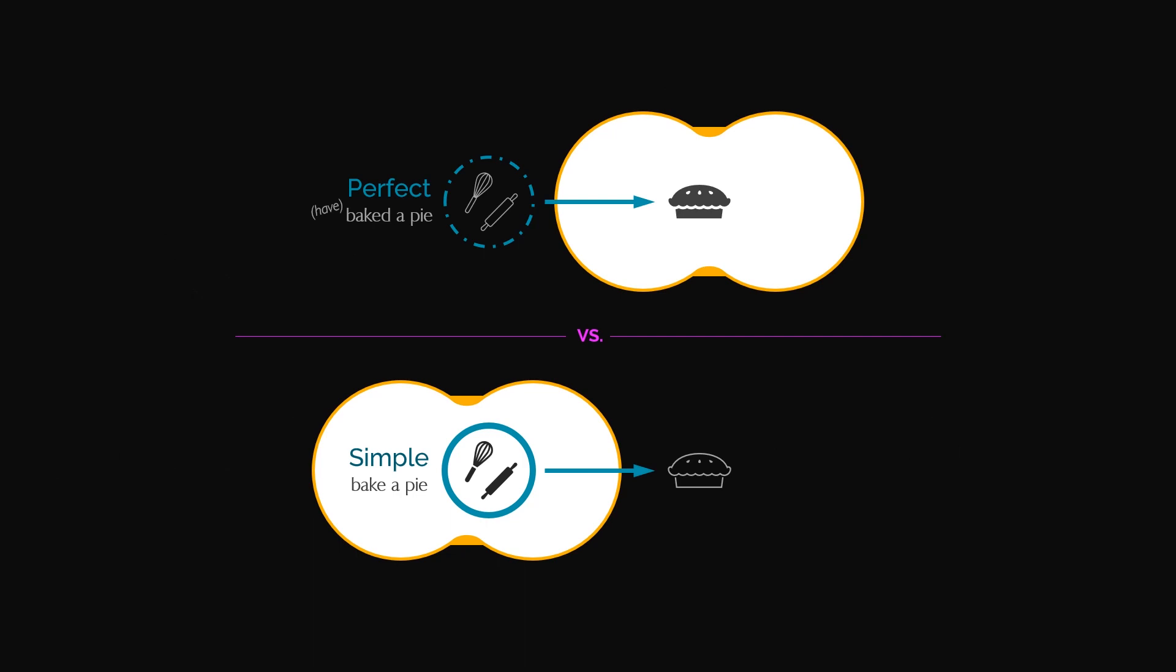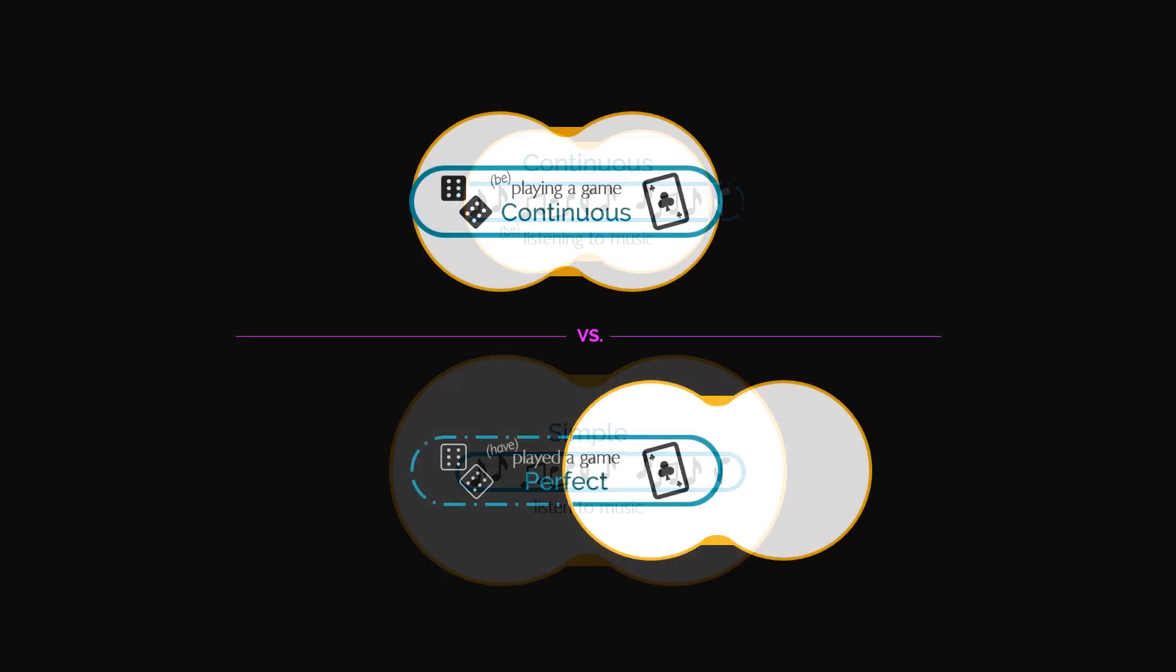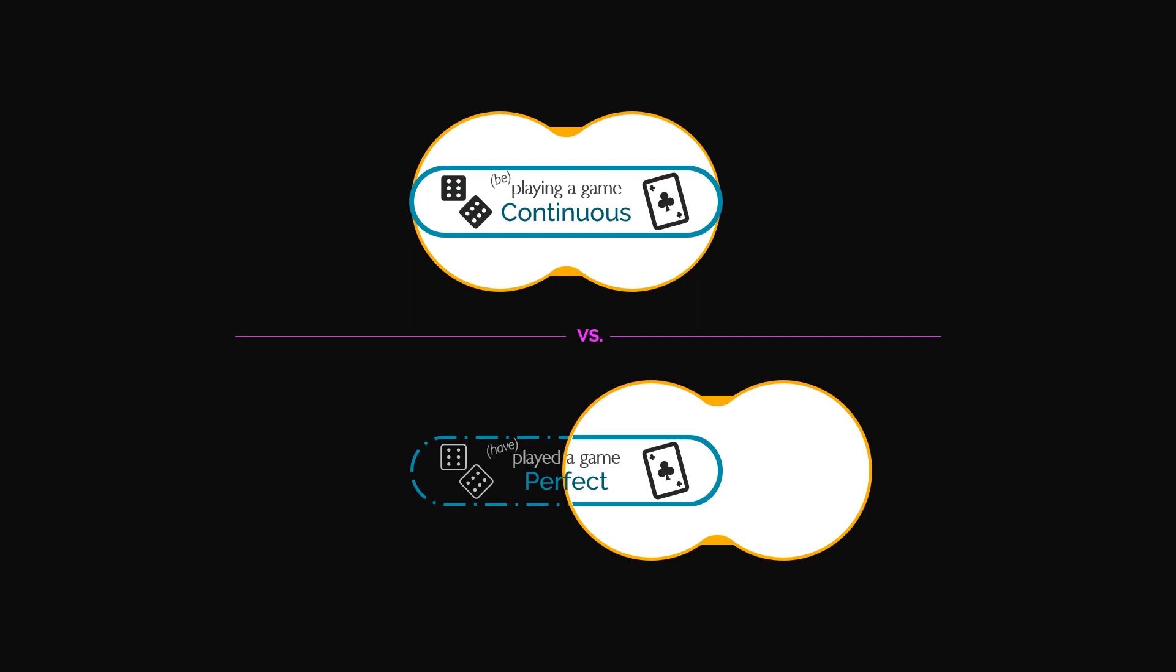This illustration represents how subjective tense can be. It depends on what the speaker focuses on. The actual verbs in our example never change, but the aspect we use to express those verbs can change when the context does.